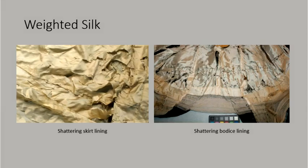During this time, silk fabric was treated with metallic salts, which were absorbed into the fibers, both increasing the weight and body of the fabric. However, the longevity of the silk is greatly compromised by this process, and the fabric degrades much faster as a result. Enough low-quality weighted silks were made and sold that the Federal Trade Commission instated weighting regulations in 1938. Weighted silks could not be visually identified at the time of purchase, but their presence in collections is all too apparent today.